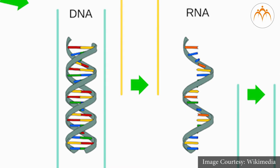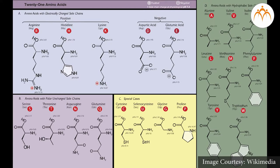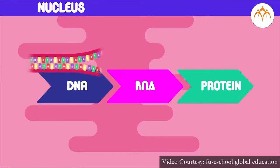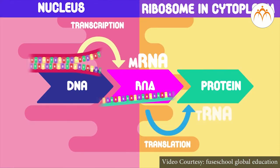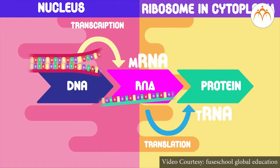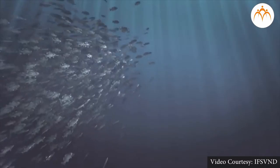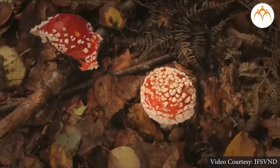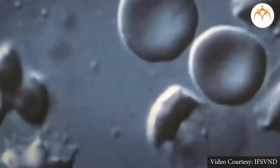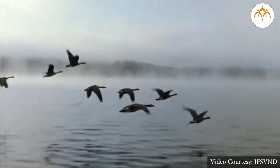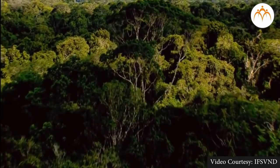DNA and RNA are similar molecules and are both built from smaller molecules called nucleotides. Proteins are made from a sequence of amino acids rather than nucleotides. Transcription and translation convert a sequence of nucleotides from DNA into a sequence of amino acids to build the desired protein. These two processes are essential for life; they are found in all organisms, eukaryotic and prokaryotic.